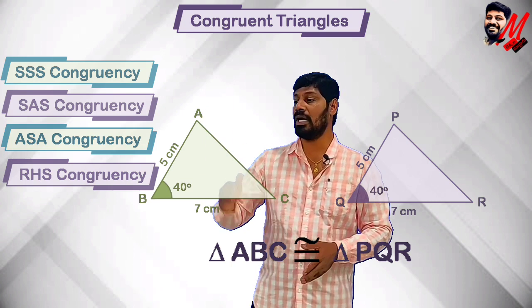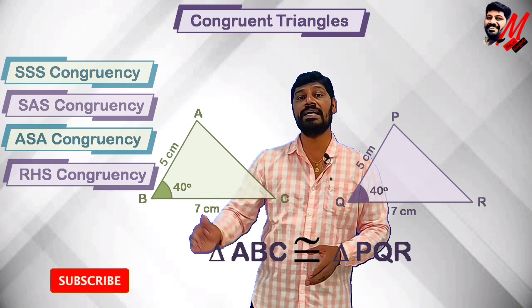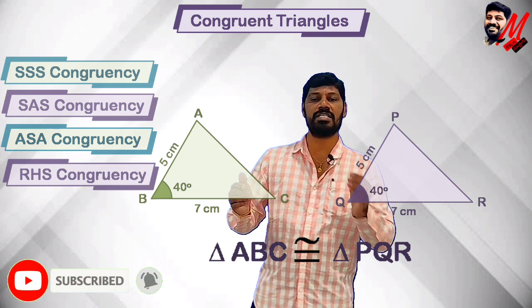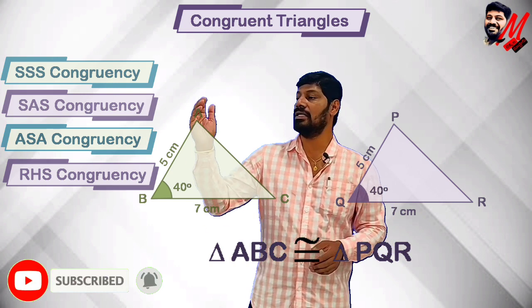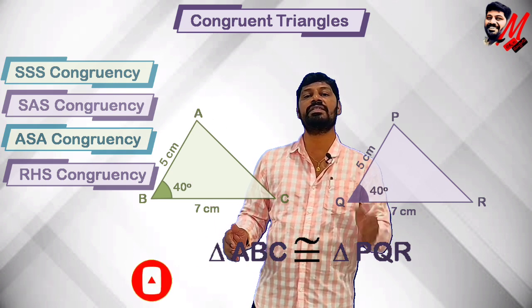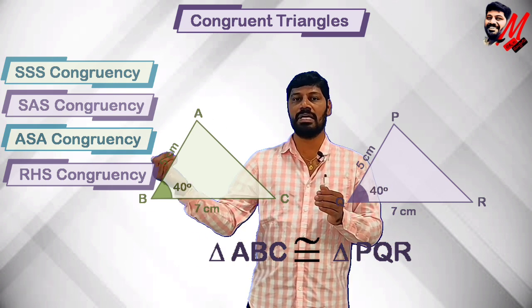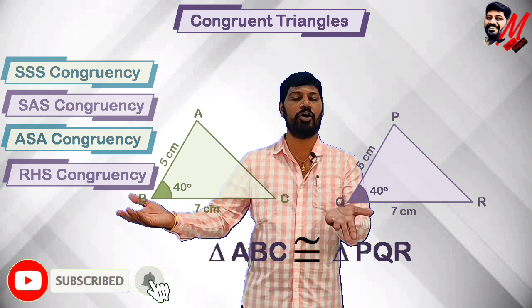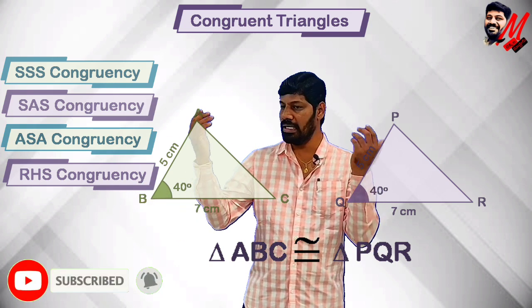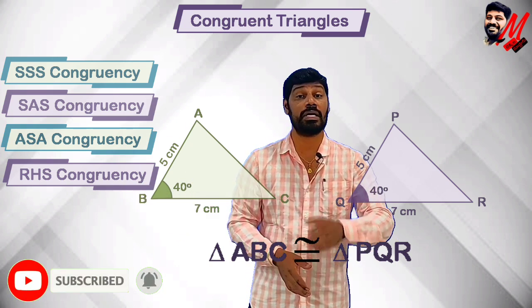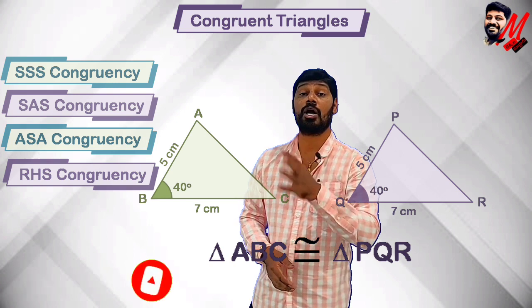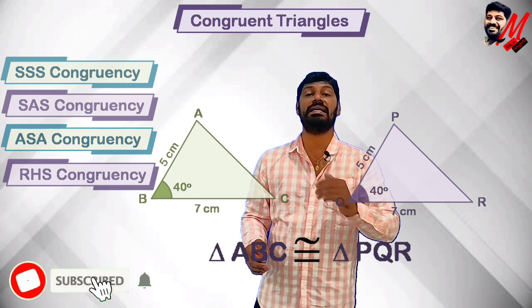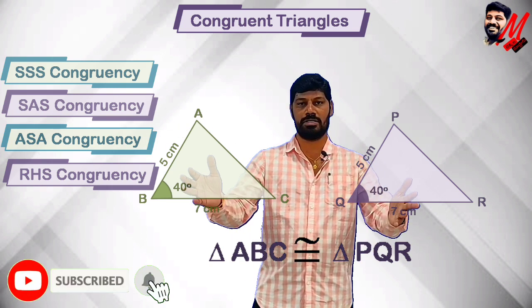For a SAS example: in triangles ABC and PQR, we have two sides and the included angle. Suppose AB equals 5, BC equals 7, and angle B equals 40 degrees; and PQ equals 5, QR equals 7, and angle Q equals 40 degrees. So these two triangles are congruent according to side-angle-side (SAS) congruency.